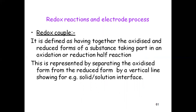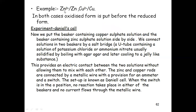A redox couple is defined as having together the oxidizing and reduced form of a substance taking part in an oxidation or reduction half-reaction. It is represented by separating the oxidized form from the reduced form by a vertical line, showing the solid-solution interface. For example: Zn2+/Zn and Cu2+/Cu. In both cases, the oxidized form is written before the reduced form.